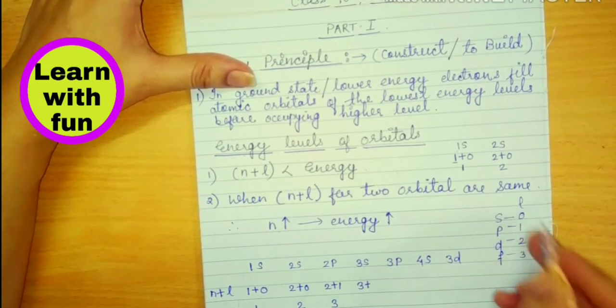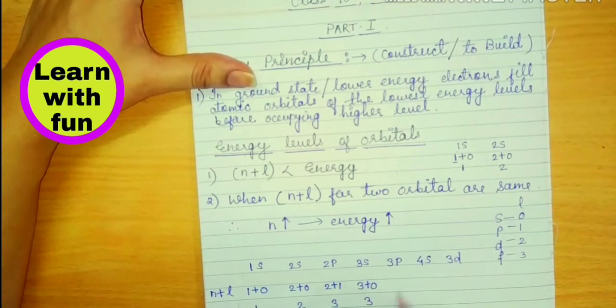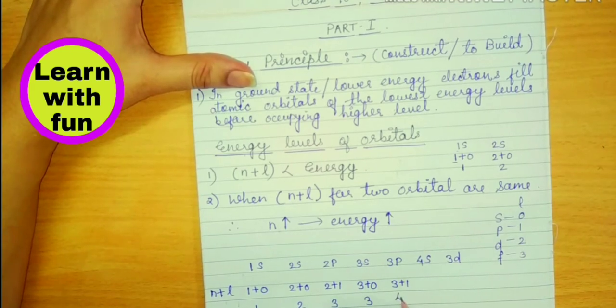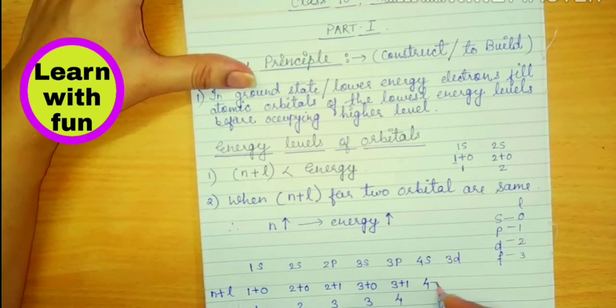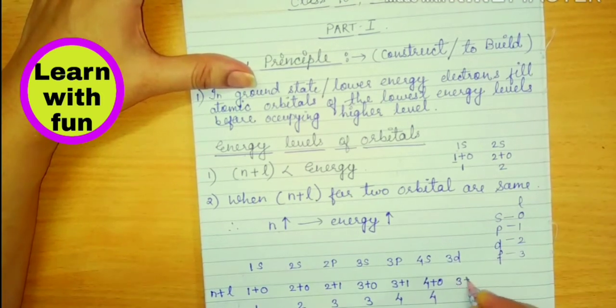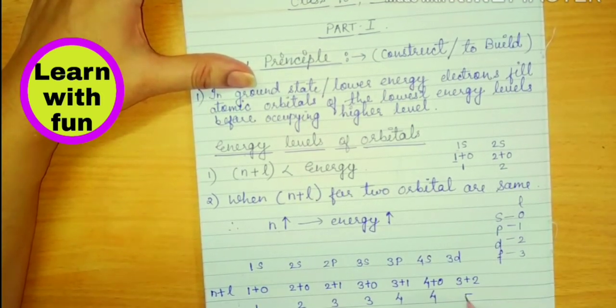3 plus S value 0 equals 3. 3 plus P value 1, so this is 4. 4 plus S, again 4. 3 plus D value is 2 and the value is 5.